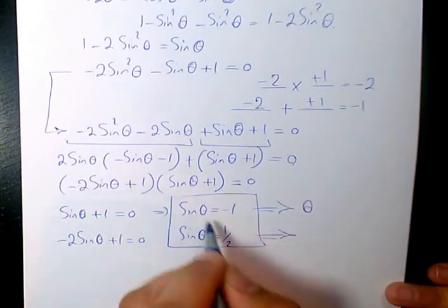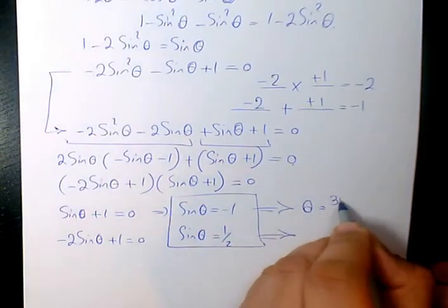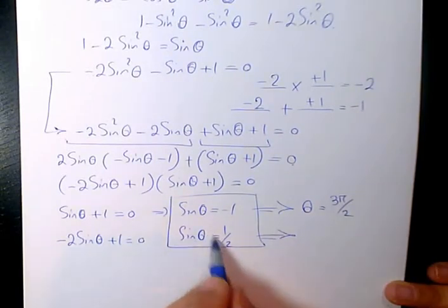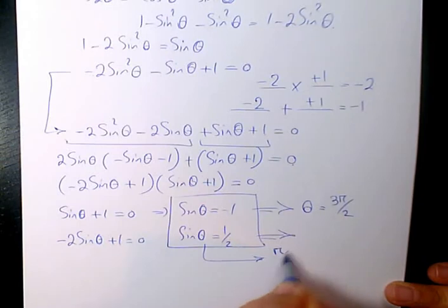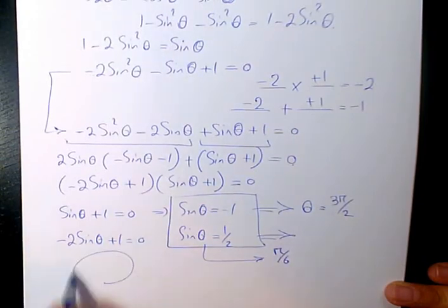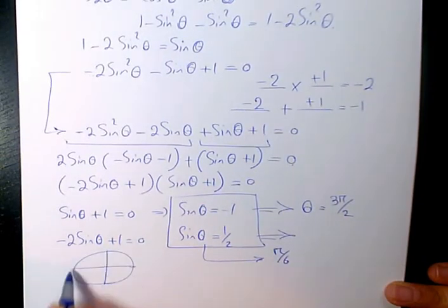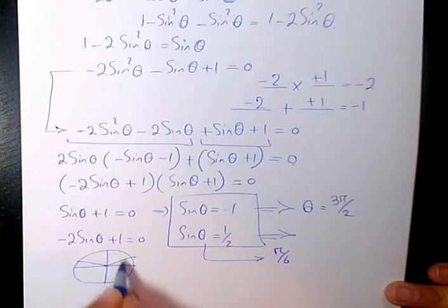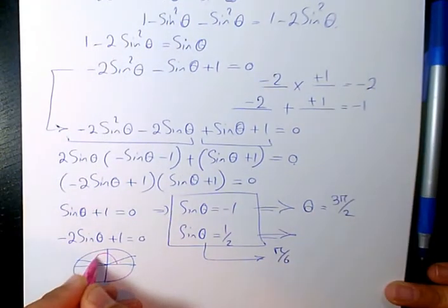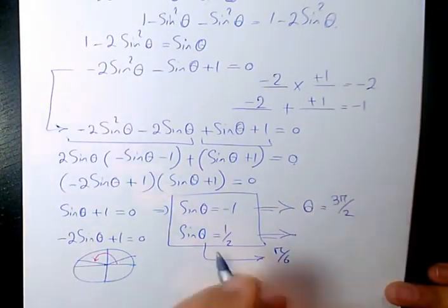So these are the two answers. Sine theta equals negative 1 when theta is 3 pi over 2, and sine theta equals 1 over 2 when theta is pi over 6. And if we use the CAST rule, sine is positive in quadrant 1 and quadrant 2. In quadrant 1 the answer is pi over 6.